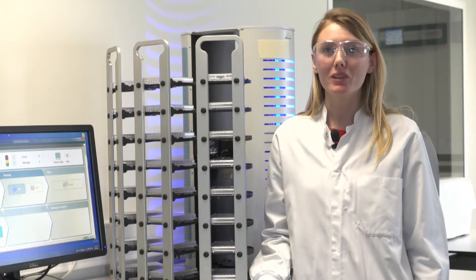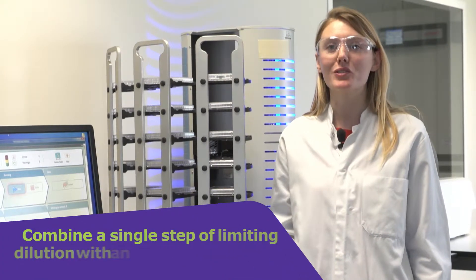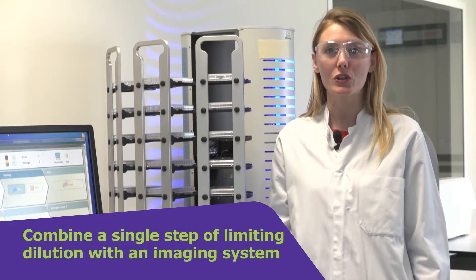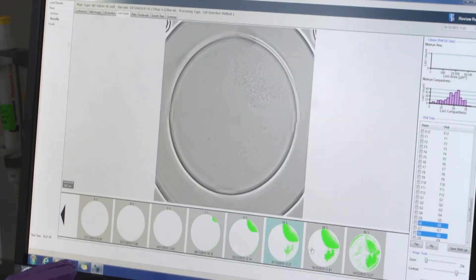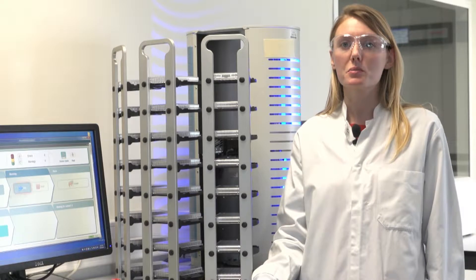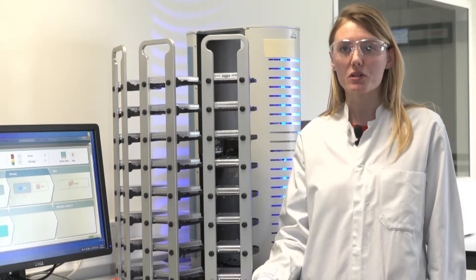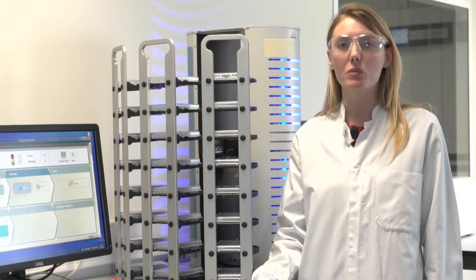To ensure the monoclonality of the final lead clones, we have decided to combine a single step of limiting dilution with an imaging system. The imaging system allows to get a picture at the zero of each well after cell isolation. When growth is observed in a well, the first picture indicates if originally the well was containing one or more cells.